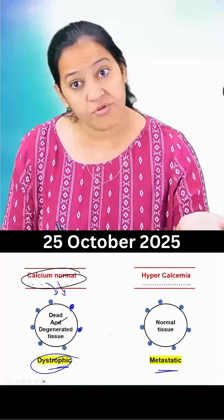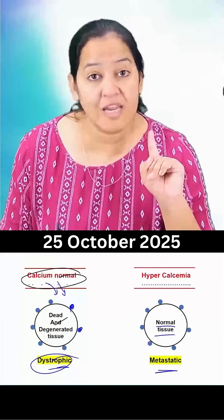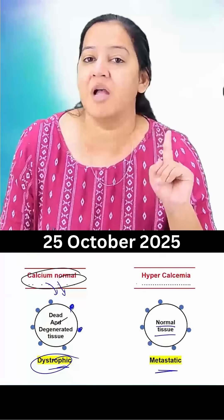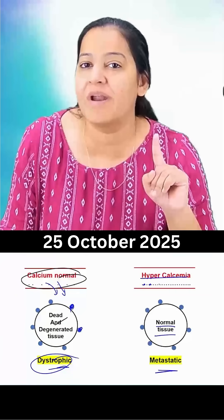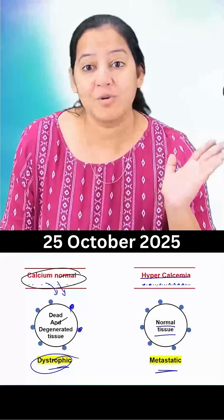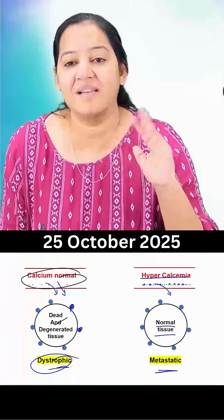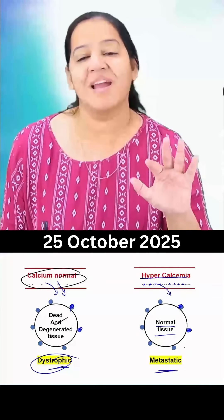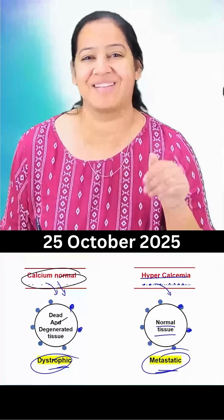On the contrary, in metastatic calcification, the tissue is absolutely normal, having alkaline pH, but the calcium level in the blood is more — it is having hypercalcemia. So the calcium is leaving the blood vessel, coming out and getting deposited over the tissue, which is normal. This is known as metastatic calcification.